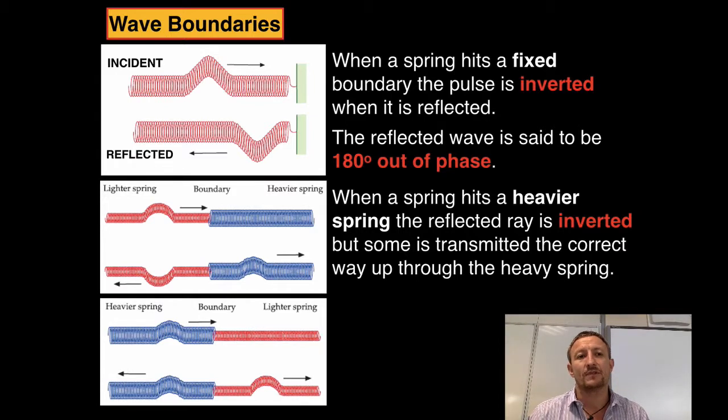So to recap what happens: we've got an incident wave hitting an immovable object, the reflected wave is going to be inverted passing back in the opposite direction.